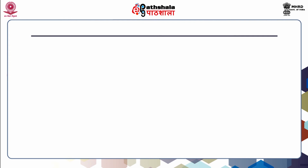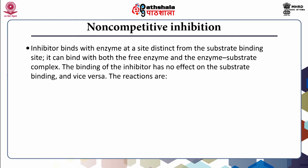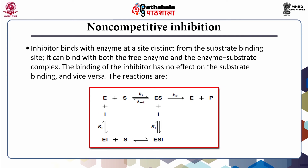In non-competitive inhibition, the inhibitor binds to the enzyme at a site distinct from the substrate binding site. It can bind to both the free enzyme and the enzyme-substrate complex. The binding of the inhibitor has no effect on substrate binding and vice versa.